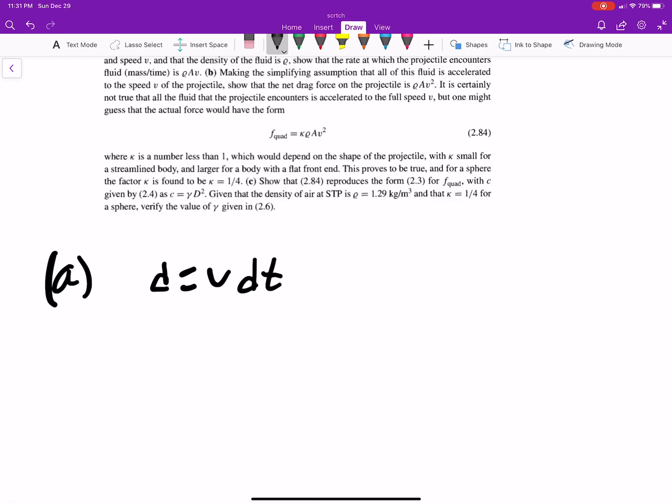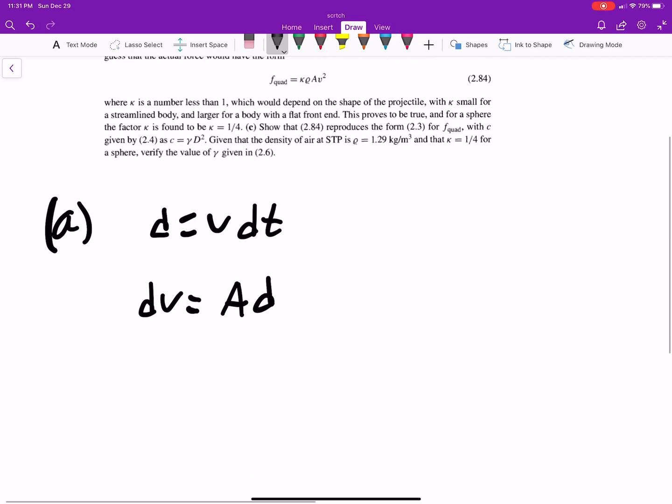And our volume, so we'll call dV volume, will be this area times the section being swept out. So we can say dV volume is A times V times dt. So it's the cross-sectional area times the bit being swept out here. Okay, so we have that.